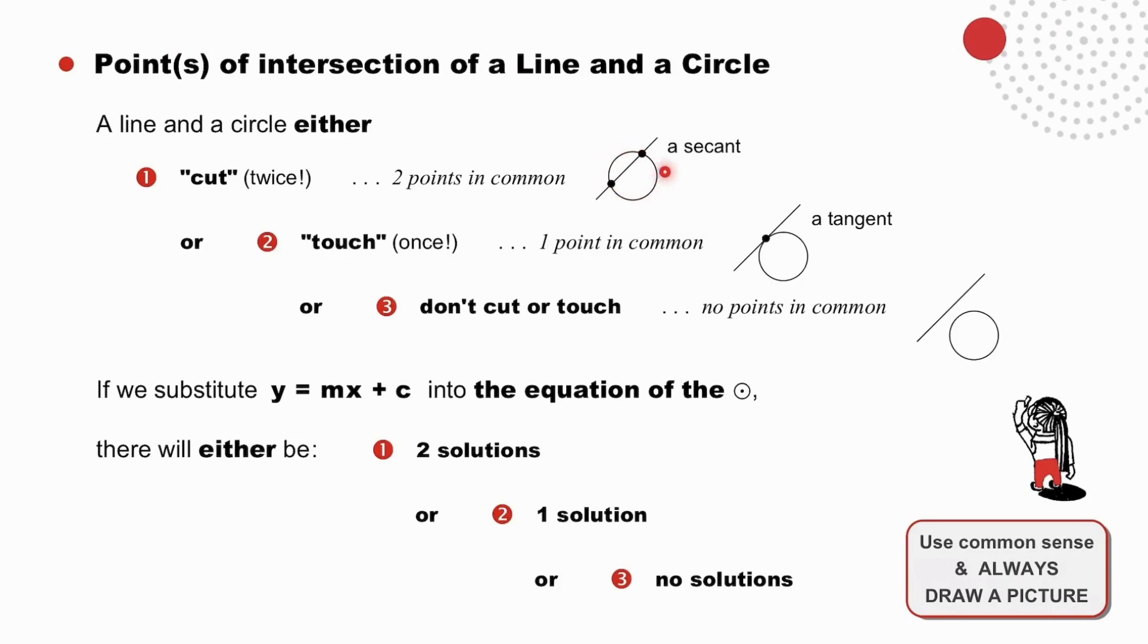A line and a circle either cut, as is this case, with two points in common, and we say the line is a secant. Or the line touches, and there is one point in common, and the line is a tangent. Or they don't cut or touch, and there are no points in common.